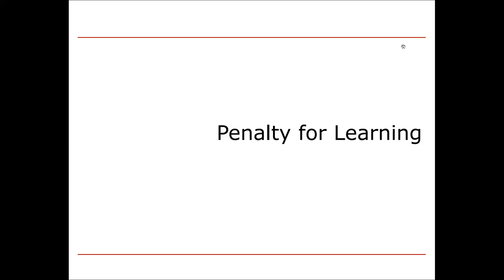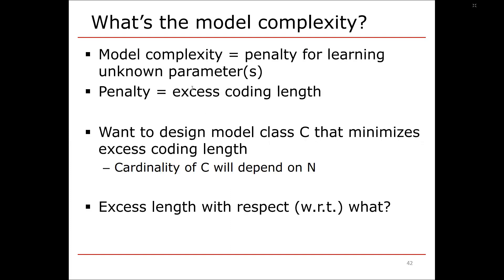Welcome to Module 7b. In Module 7a, we started discussing model complexity, which is the penalty for learning. We have a parametric class, again discussed in Module 7a, and we don't know the parameter. We have a penalty for not knowing the parameter — that penalty is an excess coding length. What we'd like to do in this module is design a model class C that minimizes the excess coding length.